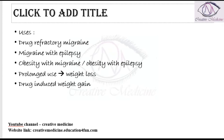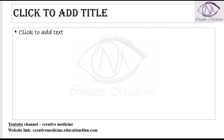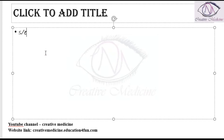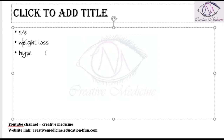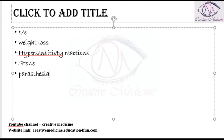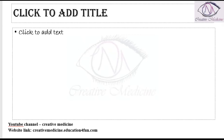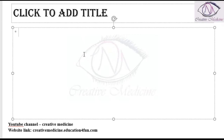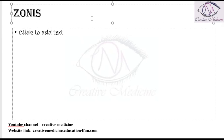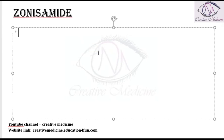The side effects of topiramate include weight loss. It can cause hypersensitivity reactions. Paresthesias are seen with topiramate. Topiramate can also cause renal stones. There is another drug called zonisamide, which is similar to topiramate and also causes renal stones as a side effect.